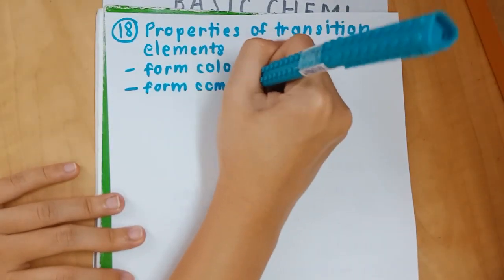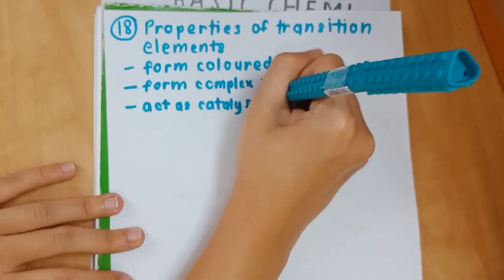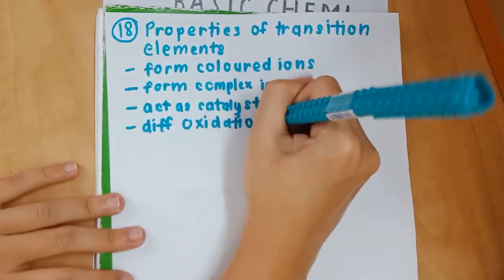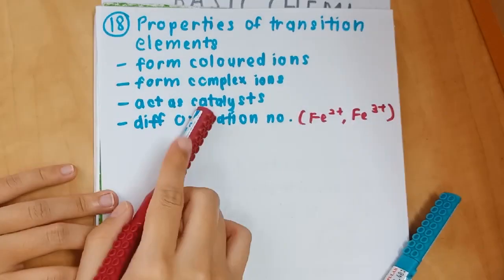First, it can form colored ions. It can form complex ions and it has different oxidation numbers and it can act as catalyst. For different oxidation numbers, the example you can provide is Fe²⁺ and Fe³⁺.